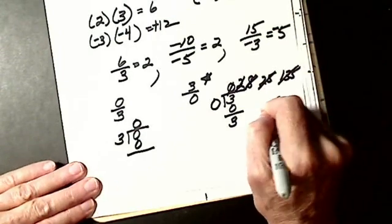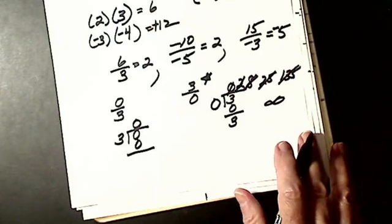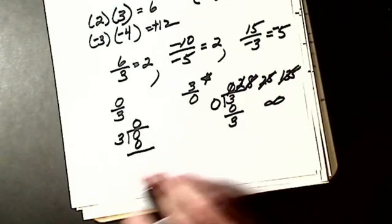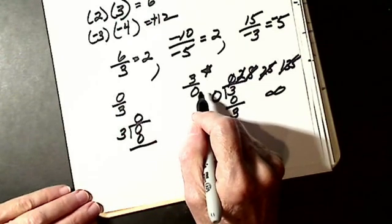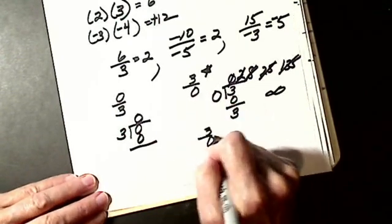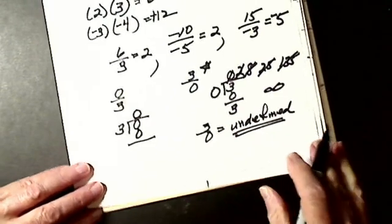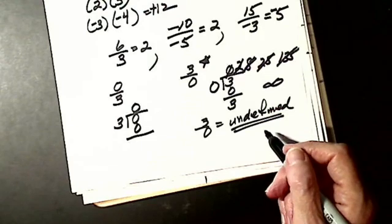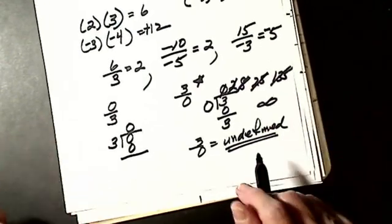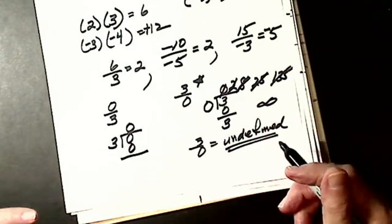So years ago, we used to call the answer infinity. But now, computers and everything, it creates an impossible situation. There is no answer. So 3 divided by 0 is undefined. It creates an impossibility. In real life, this is really important. Before I was teaching, I was a computer programmer, and I had to keep in my head all the time that you could never divide by 0, because it creates an impossible situation.